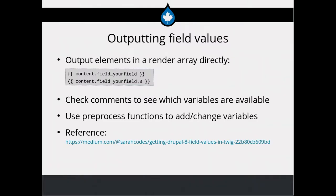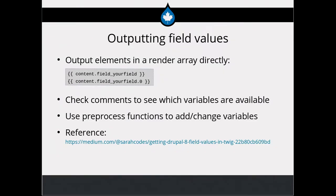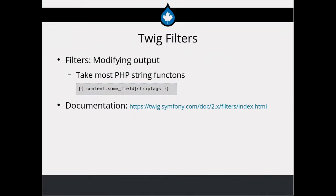There's a really good Medium article — it was just on the Drupal newsletter the other day — with a lot of really detailed instructions on how to get different field values, parts of field values, link fields, the title of a link field, and things like that. Twig filters are a way to modify the output and change what's coming from that field value or whatever else you're outputting. You can use most PHP string functions in there, as documented in the Twig templating documentation.